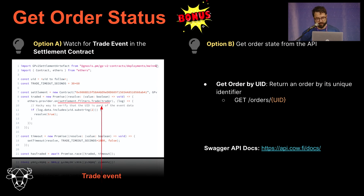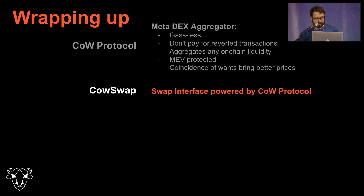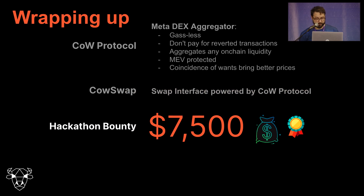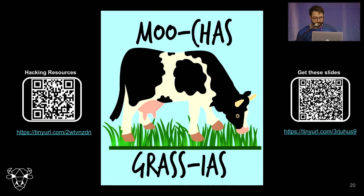The other way to check order state is using the API, which has a convenient endpoint for that. Wrapping it up: COW Protocol is a meta-dex aggregator — it's gasless, you don't pay for reverted transactions, it aggregates any on-chain liquidity, it's an MEV protector, and it finds coincidence of wants which gives you better prices. CowSwap is its interface, powered by COW Protocol. We're launching this hackathon bounty of $7,500 to build a UI or integration that increases volume and trades. We have lots of resources and code snippets available — just scan the QR code. Thank you very much, happy hacking!